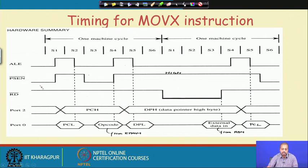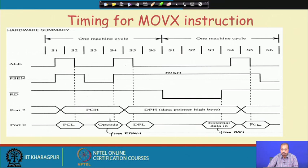How does MOVEX operate? First it has to get the instruction from memory. Assuming the opcode is in external memory, the PSEN bar line is activated to get the opcode from the external EPROM. The ALE signal is activated, the lower order address is given, the higher order address is put on Port 2 (PC high), and when PCN bar goes high the MOVEX opcode is available on the data bus.